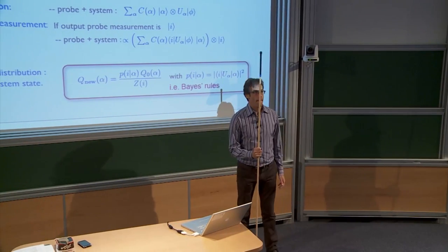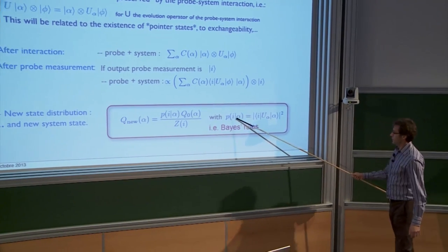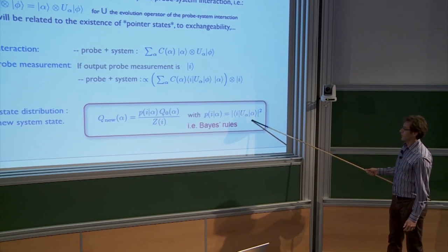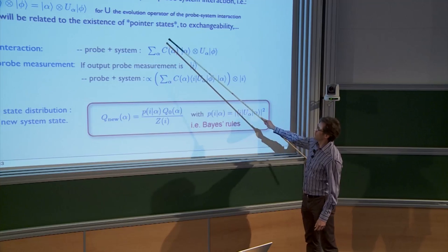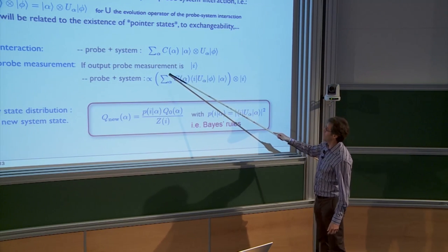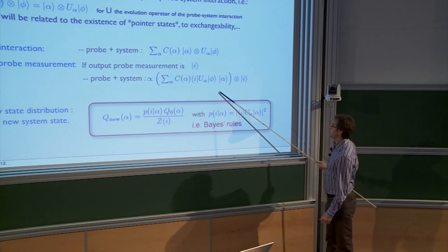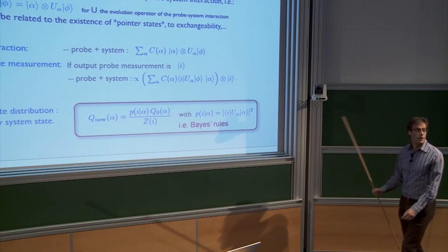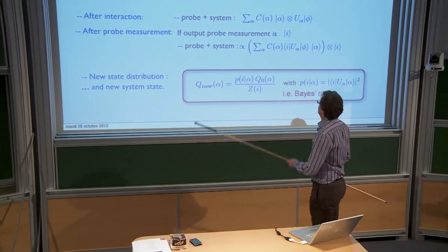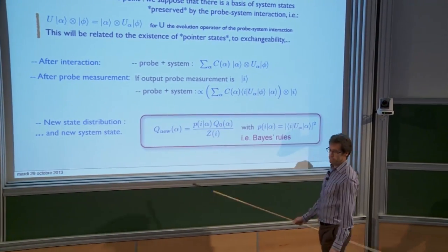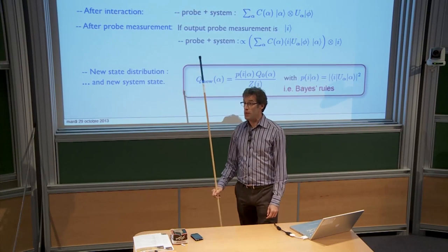A clarification: phi is absorbed into the conditional probability P(i|alpha), which is the probability to find output i given the cavity was in state alpha. Z(phi) is just a normalization. So quantum mechanics encodes Bayes' rule, and you can update the probability distribution function using it. The process that leads to progressive collapse is simply iterating these random updates — which are random because the probe measurement outputs are random by quantum mechanics.